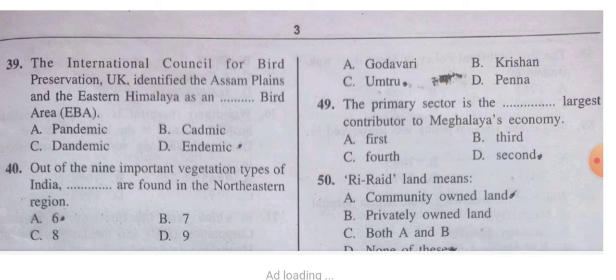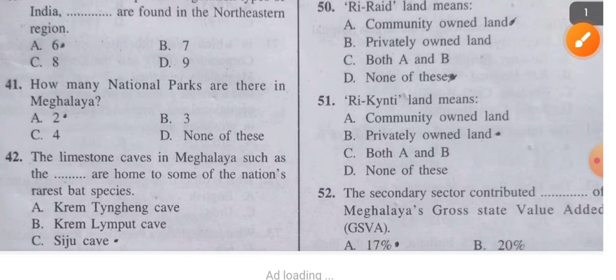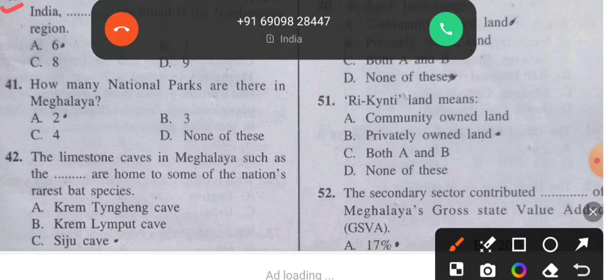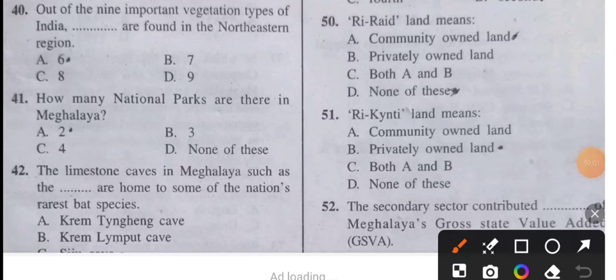Question 40: Out of nine important vegetation types of India, how many are found in the northeastern region? The answer is six.